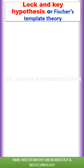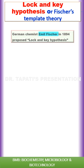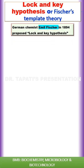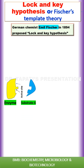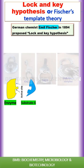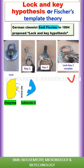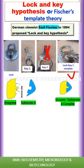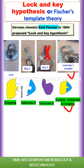The first hypothesis is the Lock and Key hypothesis. According to this hypothesis, enzyme specificity results from the complementary nature of the substrate and the enzyme's active site. Only a key of the correct shape and size fits into the keyhole of the lock. Similarly, a substrate with the correct shape and size fits into the active site of the enzyme.